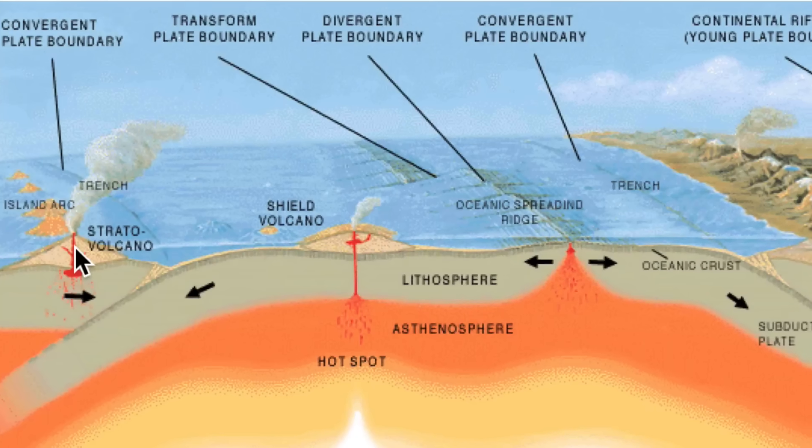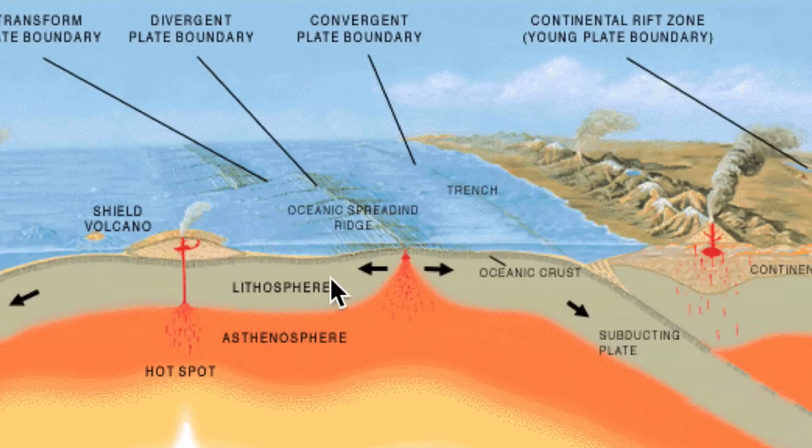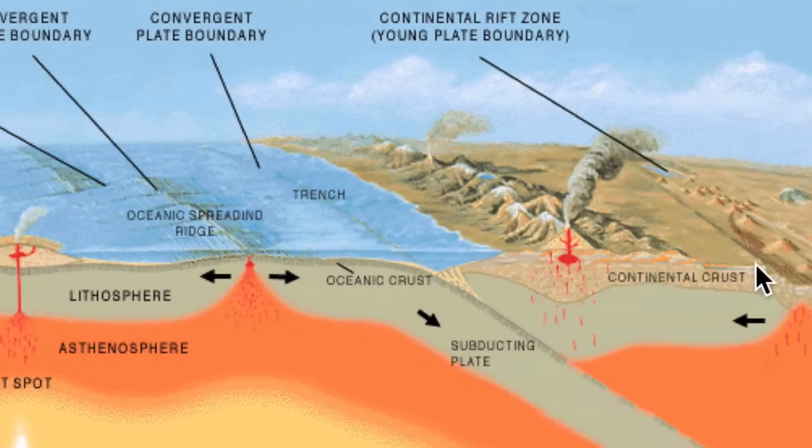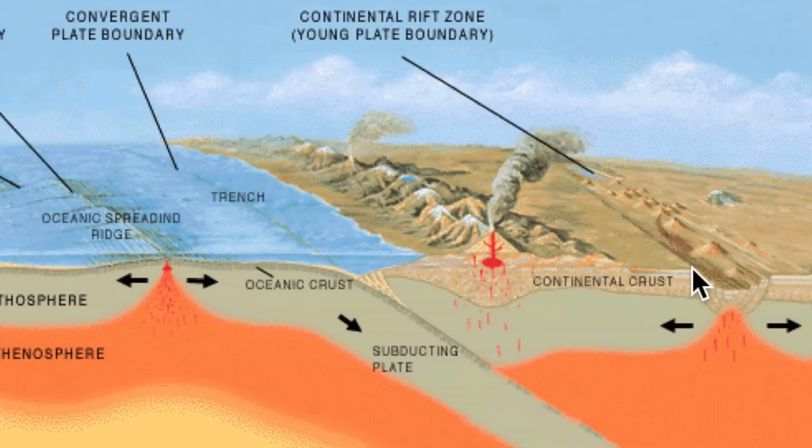We could have divergent boundaries. An example could be right here. So we have this oceanic plate moving away from this oceanic plate. So we get this mid-oceanic ridge. We could have a rift valley where this continental plate is being pulled apart.